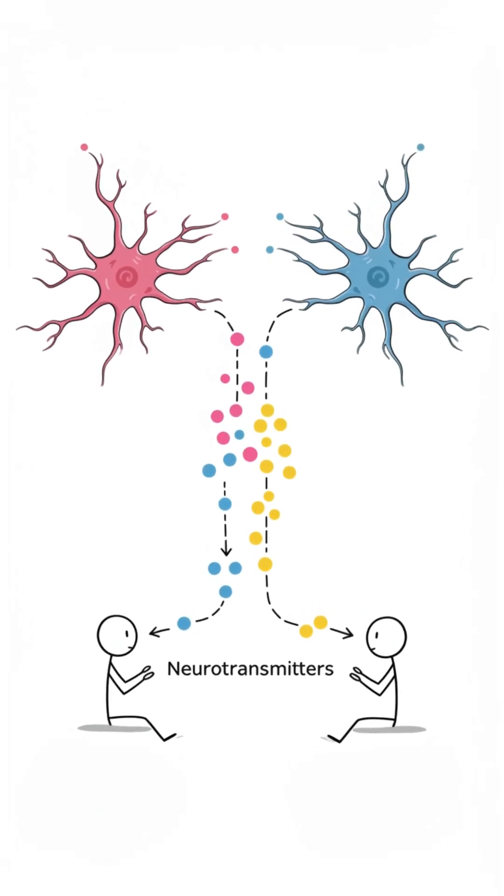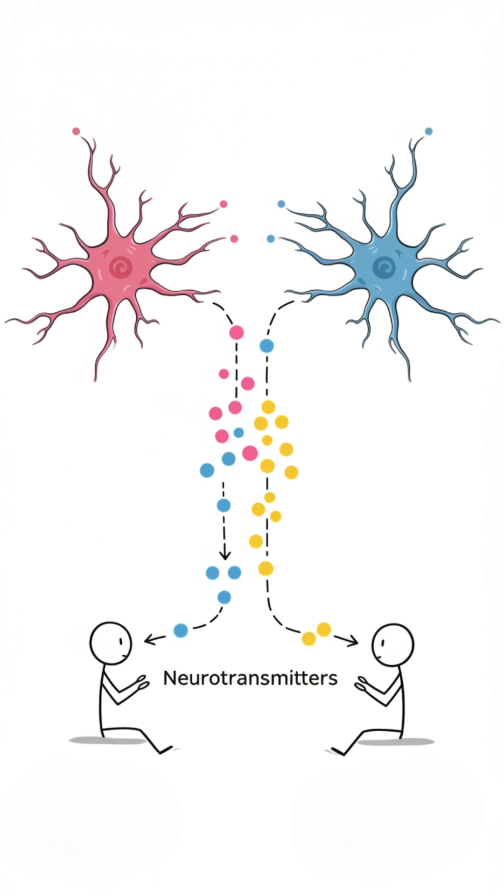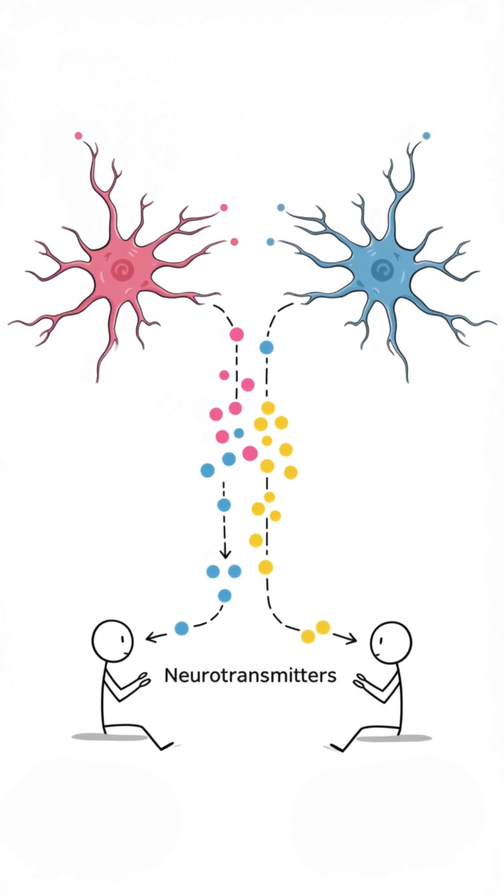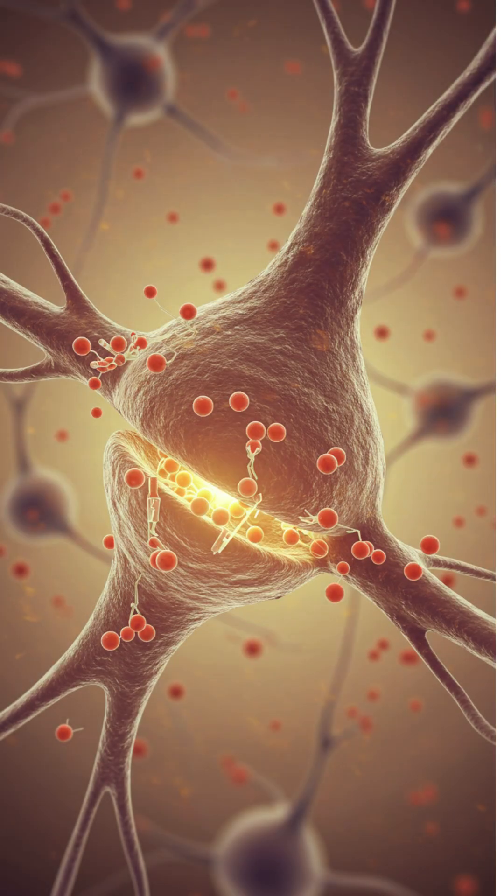In reality, antidepressants don't directly make you happy. They work by balancing certain chemicals in your brain called neurotransmitters, like serotonin, norepinephrine, and dopamine.